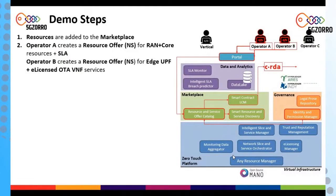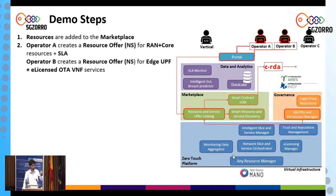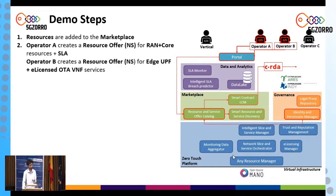Before that, the product offerings need to be created, since so far we have only created service specifications that describe the services that could be offered to other stakeholders. In this second step of the demo, we use for Operator A and Operator B the SLA template, the license templates, and the service specifications created to build product offerings — one for Operator A offering the core, and one for Operator B offering the edge resources.